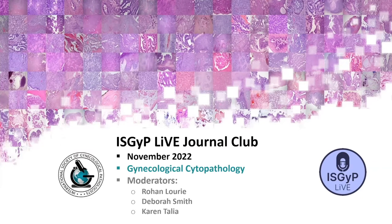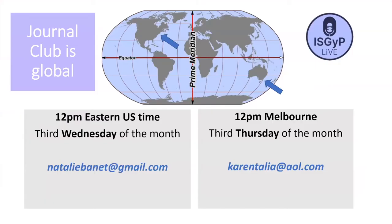Our topic for this month is gynecologic cytopathology and we have two trainees and an early career pathologist presenting today. I'd like to encourage those of you in the audience who are not ISGIP members to consider joining the society. Membership fees are discounted if you come from a developing country and membership is free for trainees. The Journal Club alternates between the USA and Australia month by month, which means two times a day to choose from for those of you who want to present or join us live.